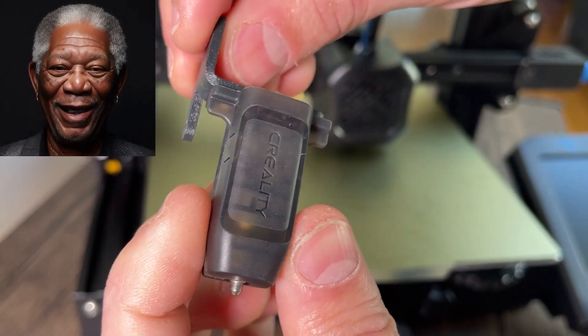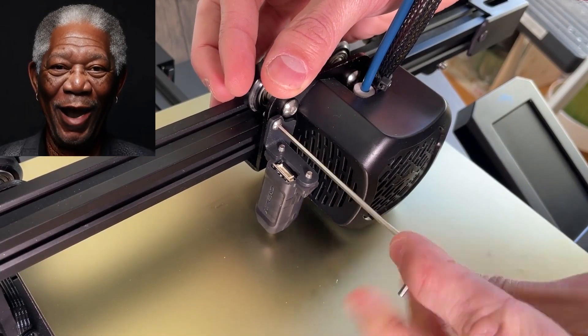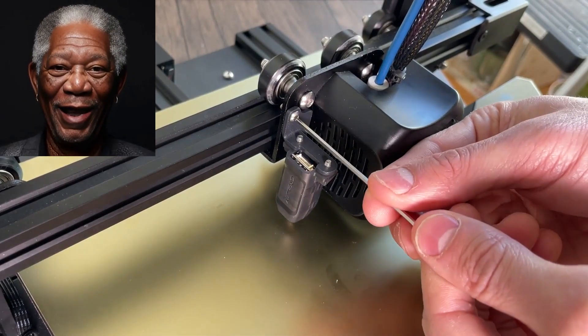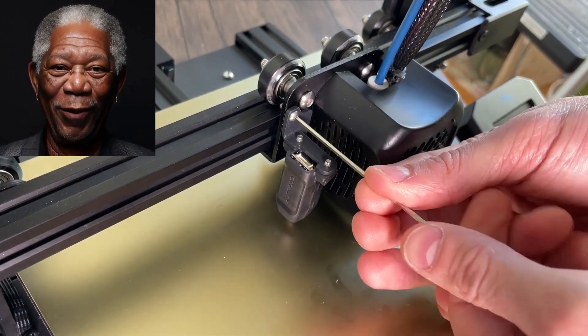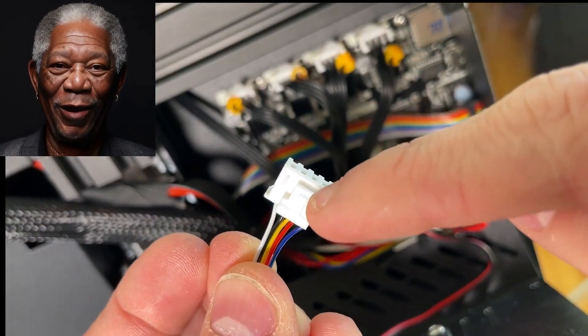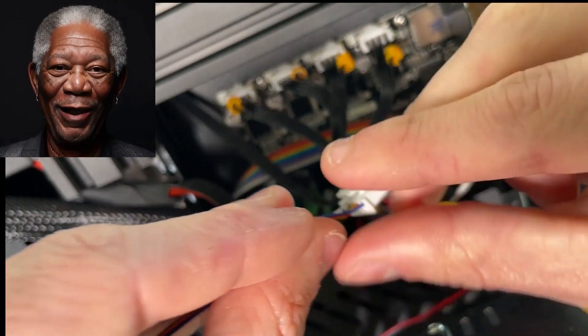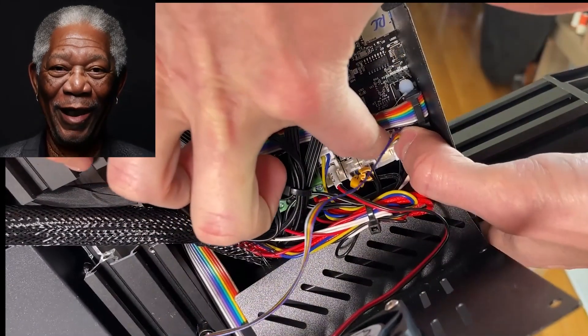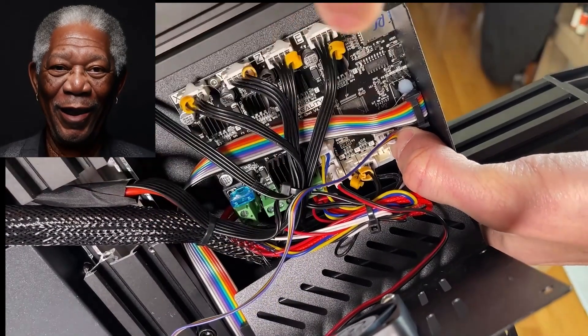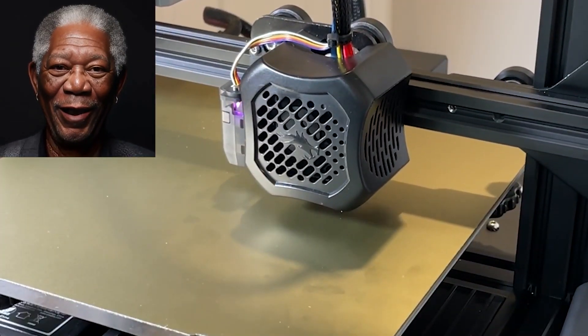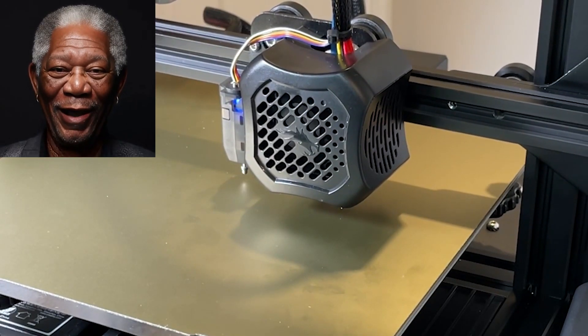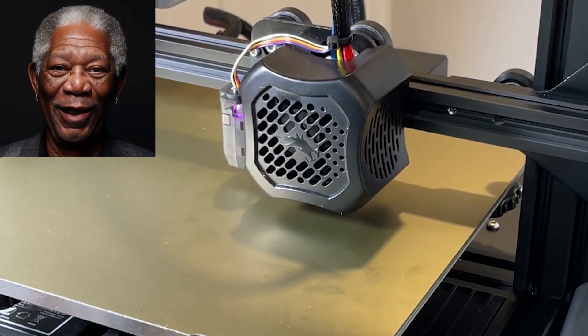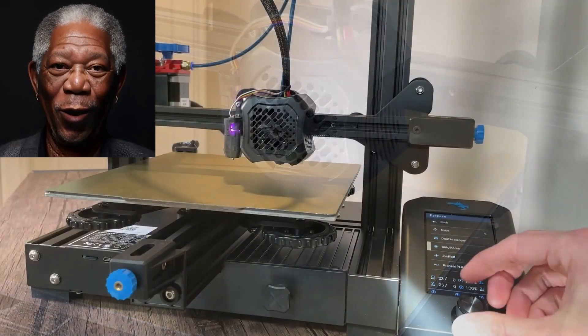Number 6: Auto-bed leveling made easy with CR-Touch. Say goodbye to manual bed leveling headaches. With the CR-Touch Auto-bed leveling sensor, you can now automate the bed leveling process. This means more accurate and consistent leveling, saving you valuable time and ensuring every print starts on the right foot. The CR-Touch uses an electromagnetic sensor to map the surface of your bed, compensating for any irregularities and ensuring a uniform first layer. Enjoy hassle-free bed leveling and consistent print quality with this essential upgrade.